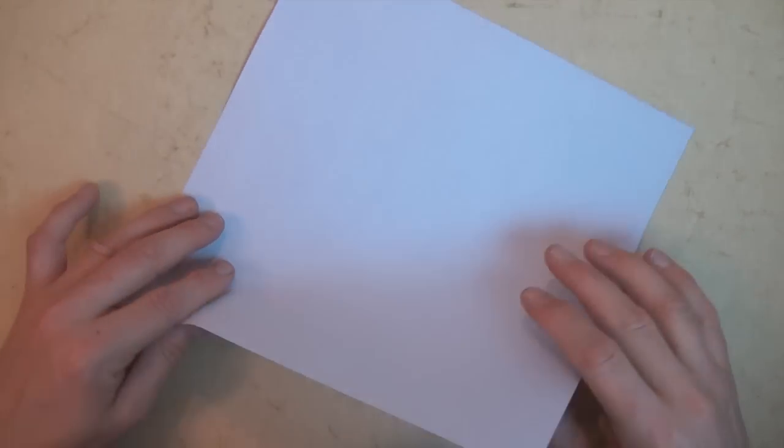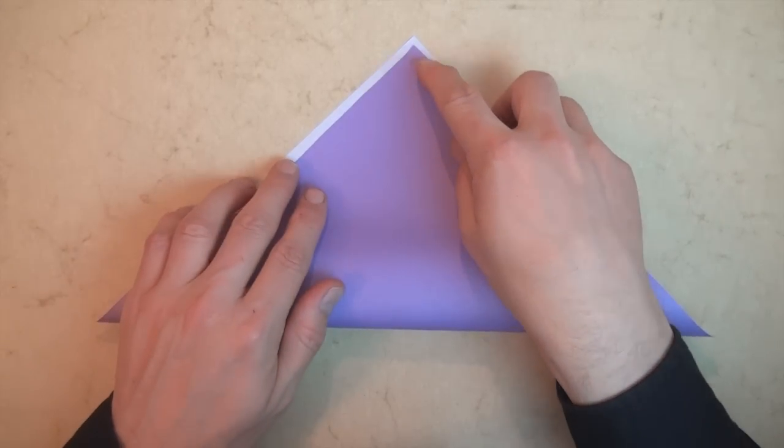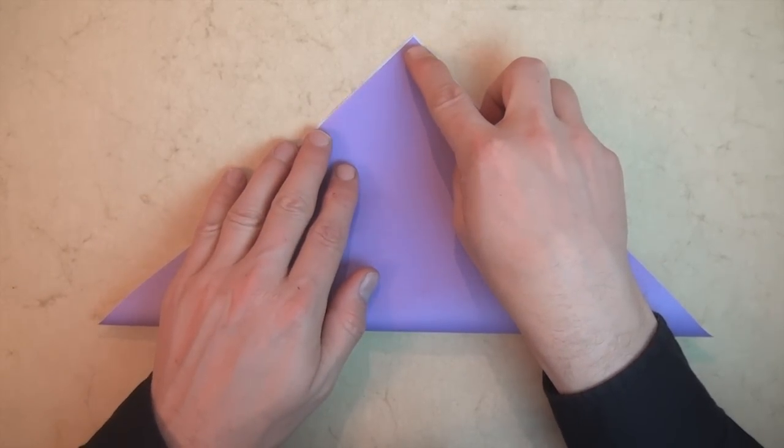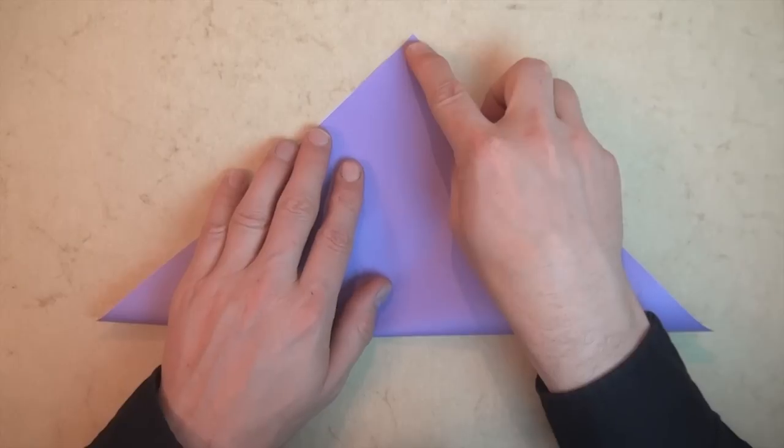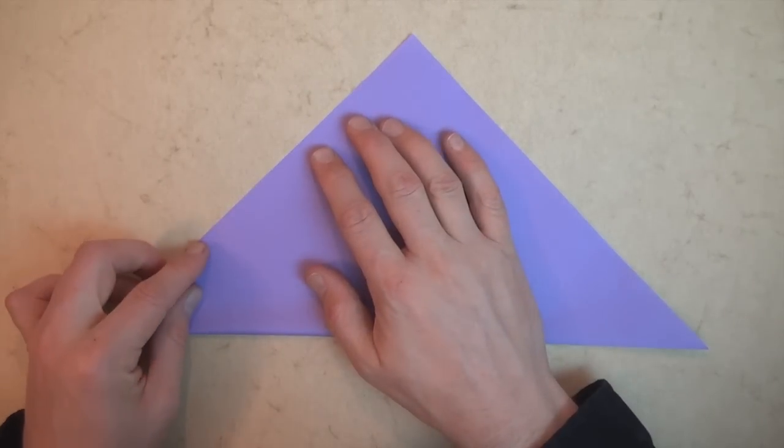So let's start white side up, and let's valley fold diagonally in half. And make sure to make really exact folds. So just line it up exact and make really sharp folds.